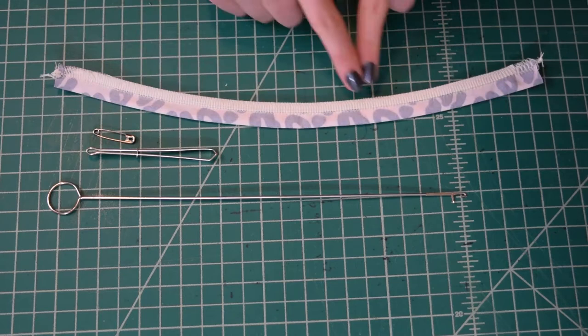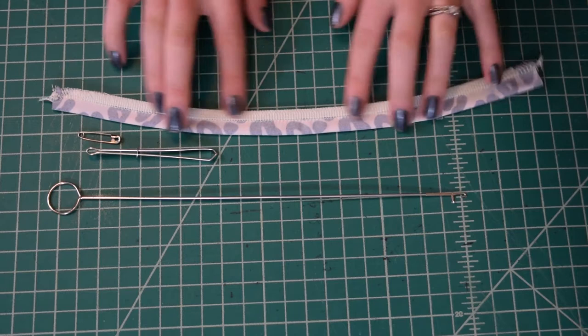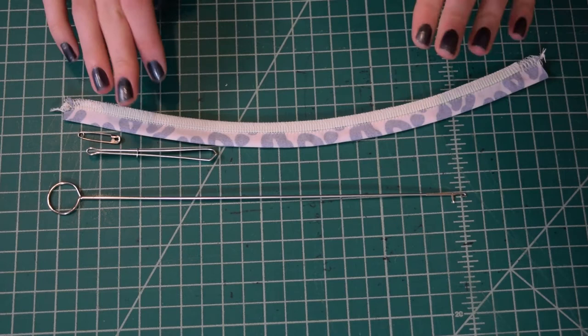But this method of turning fabric tubes will work whether it's a knit or a woven fabric and whether or not there's elastic in the actual seam. The elastic doesn't matter at all, it doesn't change the technique.